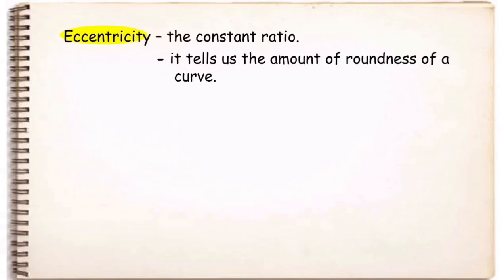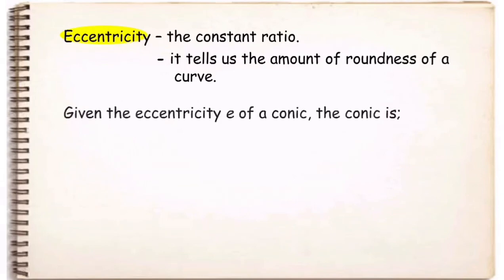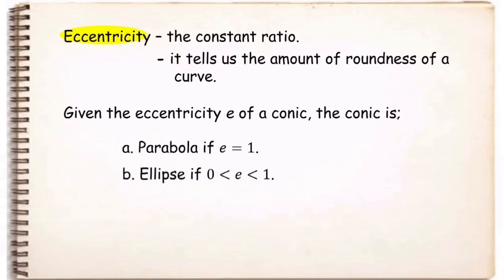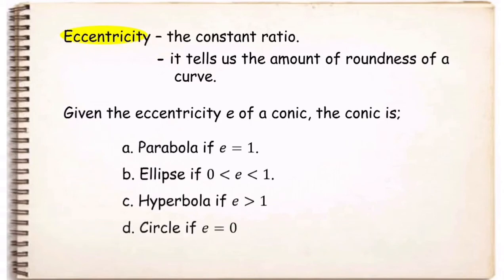Eccentricity is the constant ratio that tells us the amount of roundness of a curve. Given the eccentricity of a conic denoted by e: the conic is a parabola if e equals one; an ellipse if e is greater than zero but less than one; a hyperbola if e is greater than one; and a circle if e is equal to zero.